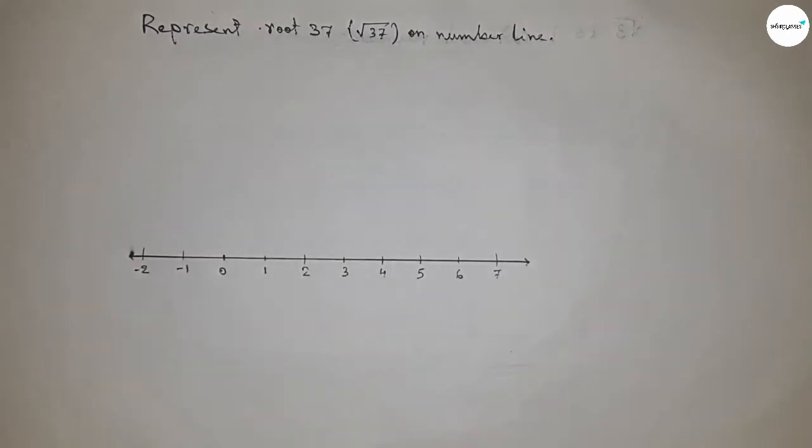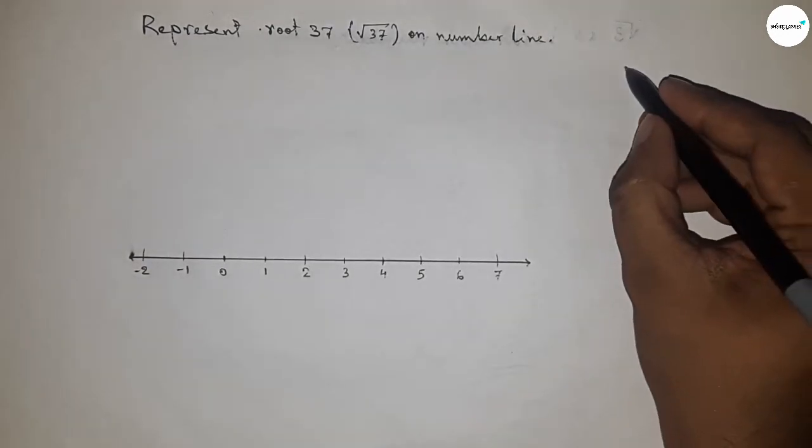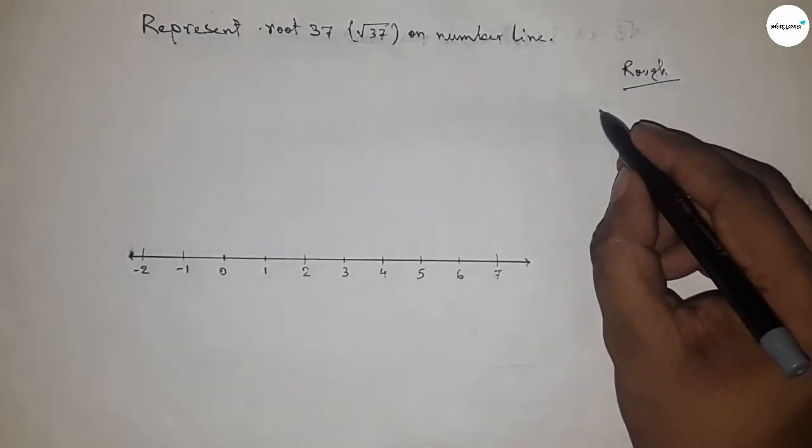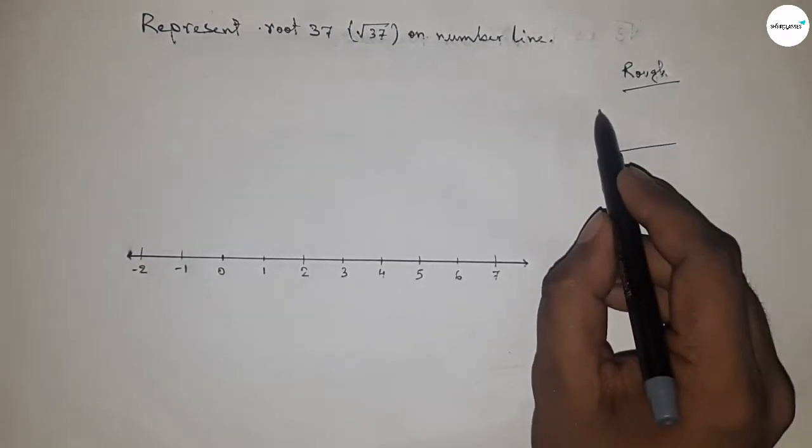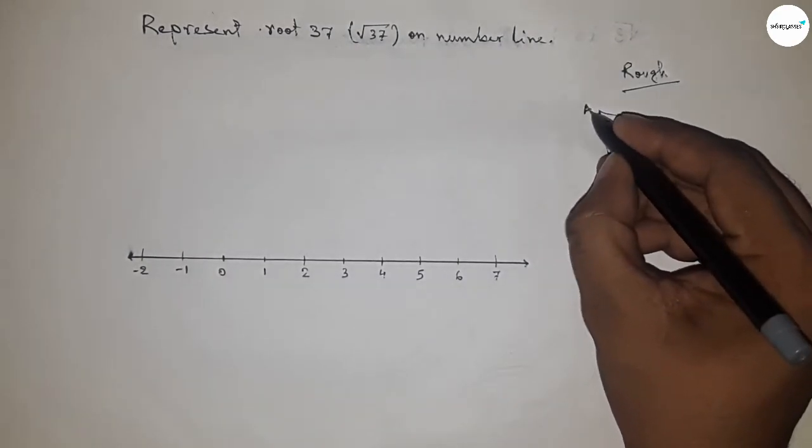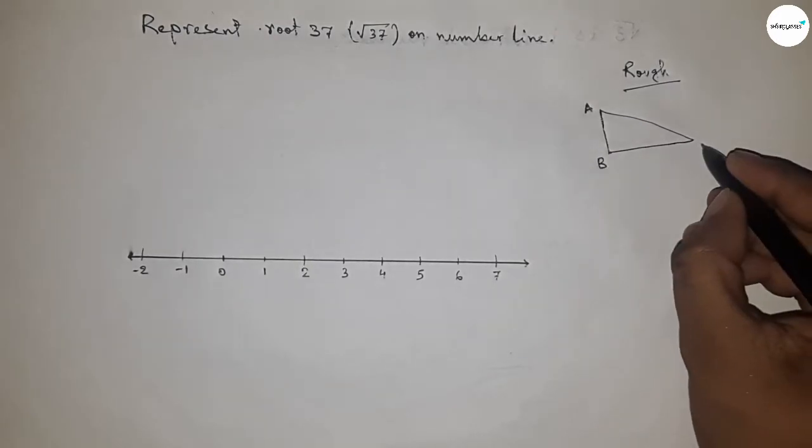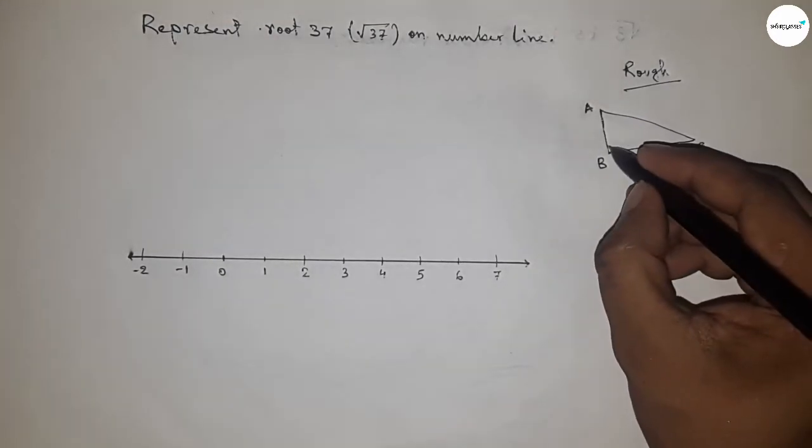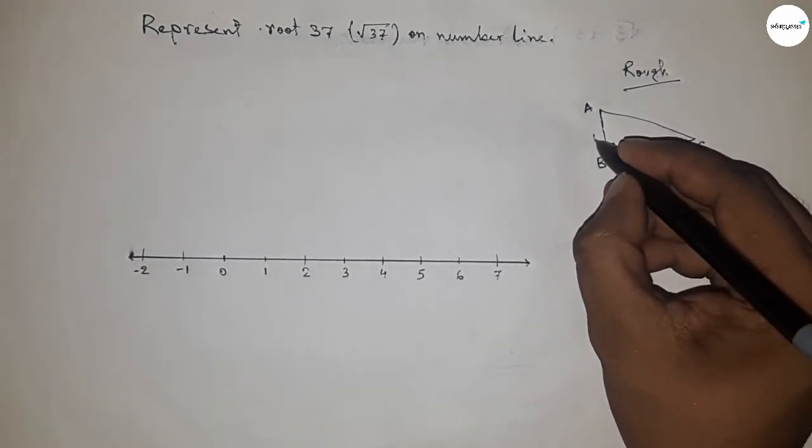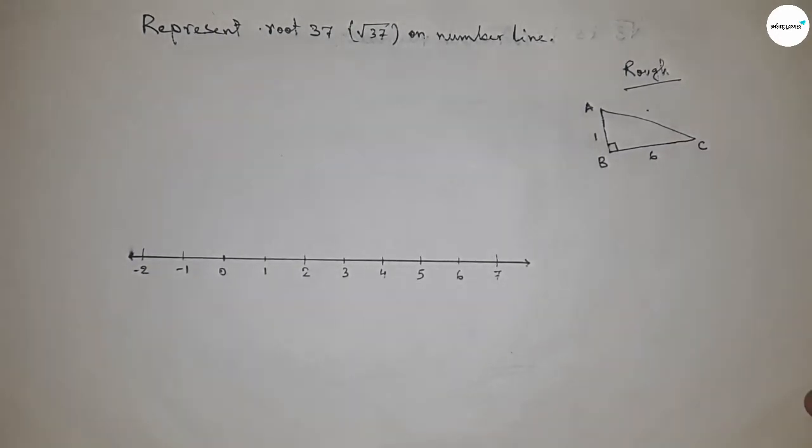Now let's discuss the concept of root 37. If there is a right-angled triangle ABC with base 6 and height 1, what is the hypotenuse? By Pythagoras theorem, we can find the hypotenuse equals the square root of height squared plus base squared.